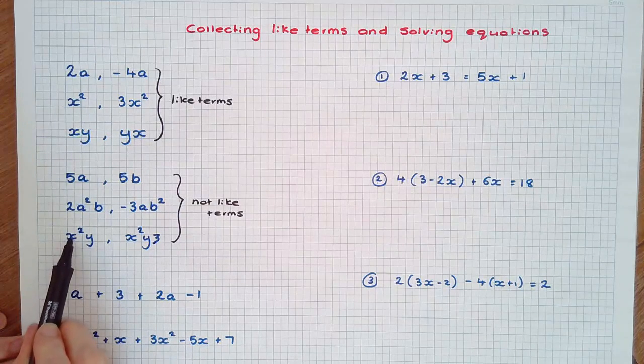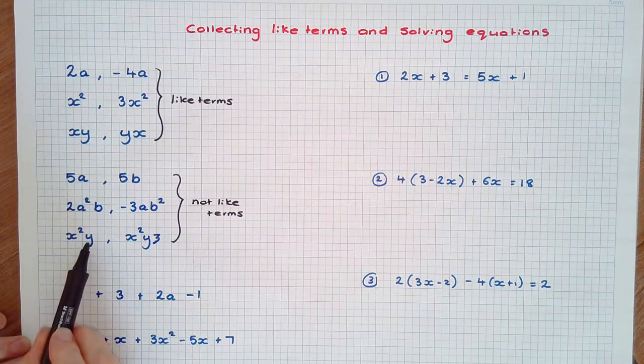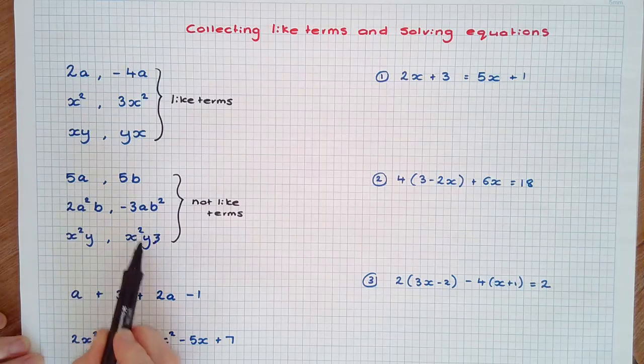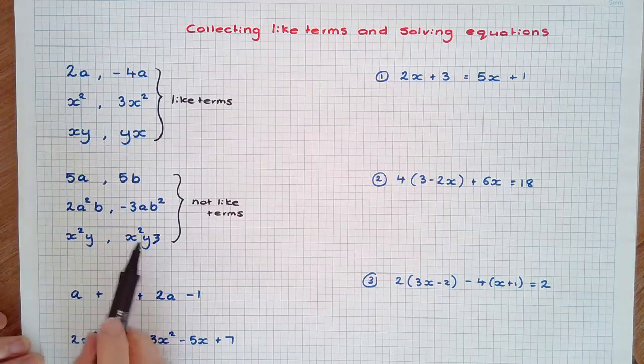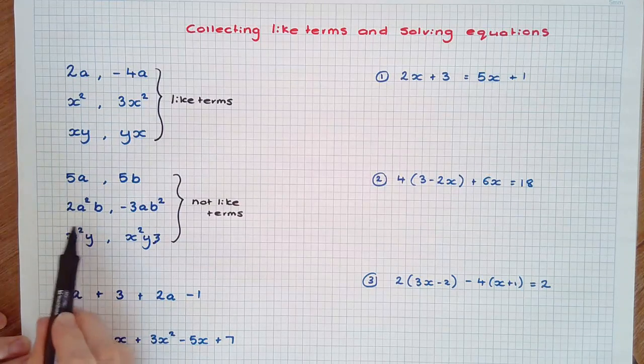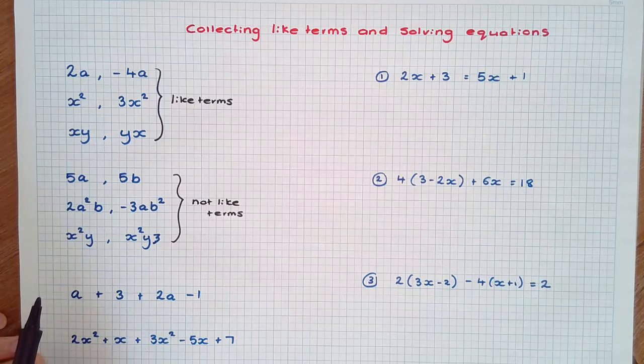And lastly, x-squared y and x-squared yz are not considered like terms because the first term does not contain z.